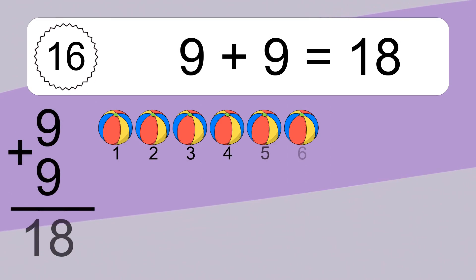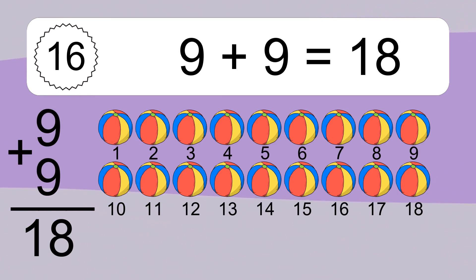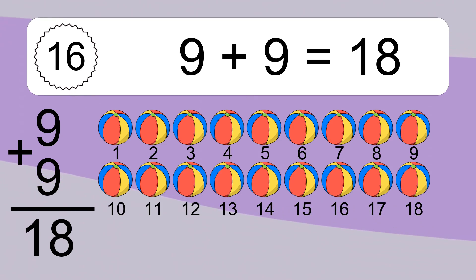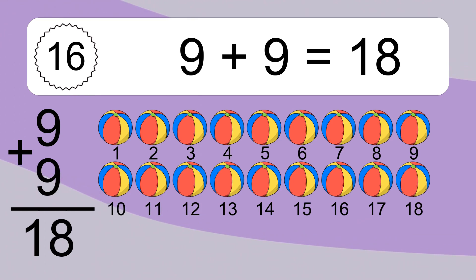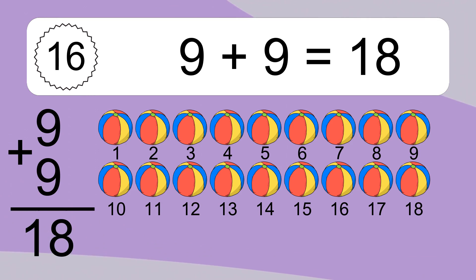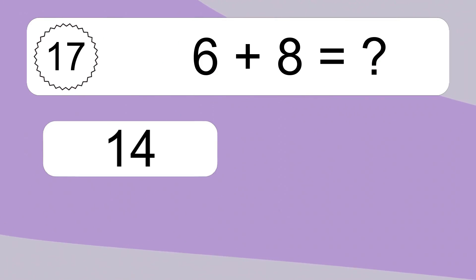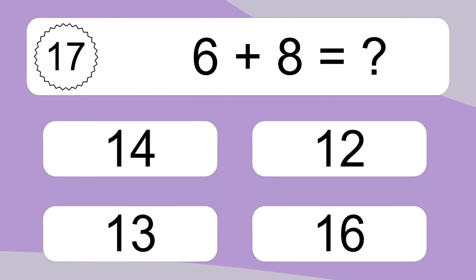9 plus 9 equals 18. Let's count it. 1, 2, 3, 4, 5, 6, 7, 8, 9, 10, 11, 12, 13, 14, 15, 16, 17, 18.